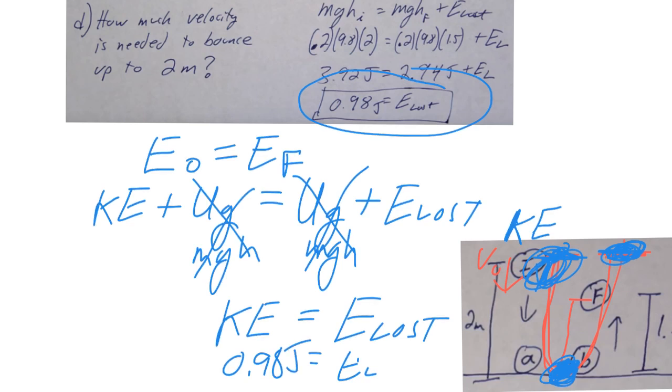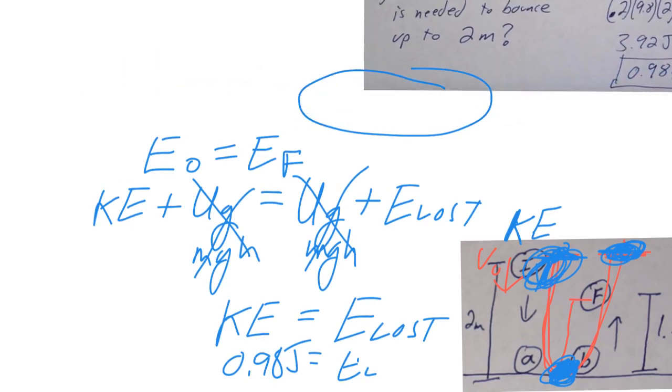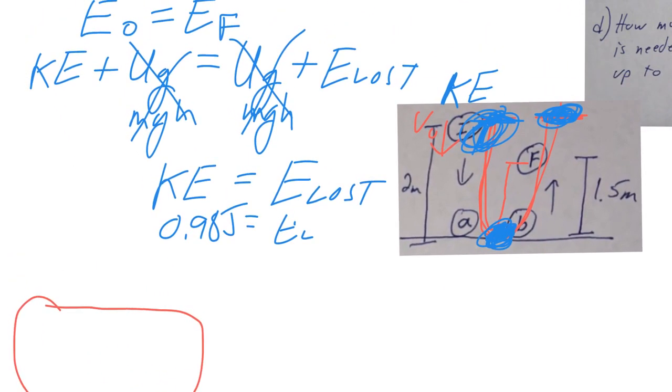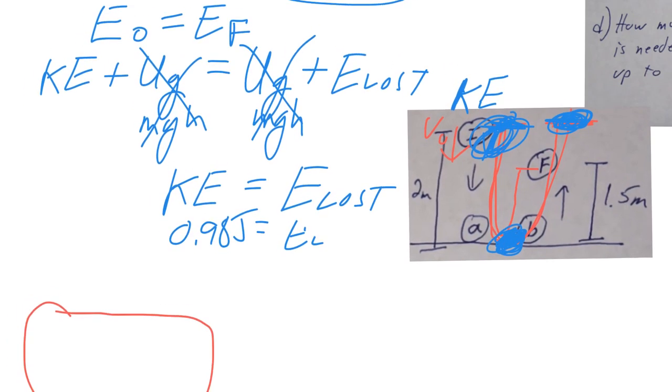All right, so let's go ahead and solve this. Let's move this out of the way, move this up a little bit. And we know kinetic energy, therefore kinetic energy equals one half mv squared. And we'll just do the math here, so 0.98 equals one half, the mass was 0.2 times v squared.